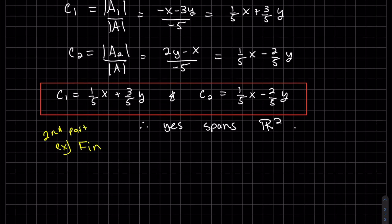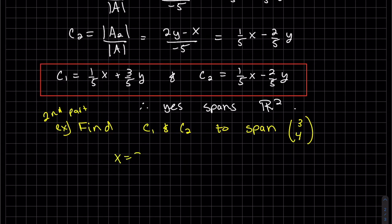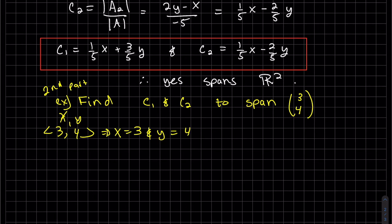So now let's find the second part to the same question: find C₁ and C₂ to span the vector 3, 4. This means my x is 3, my y is 4 because this is my vector 3, 4, x, y. So we can plug x and y into C₁ and for C₂. Let's find it.